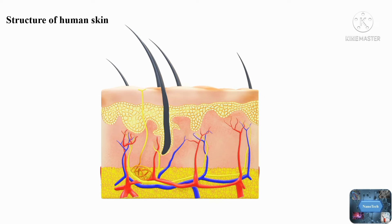A wound can be defined as an interruption in normal anatomic structure and function caused by thermal, physical, mechanical, or electrical damage to the skin. External damage causes superficial wounds above the subdermis or deep wounds that can damage the dermis, epidermis, and hypodermis.